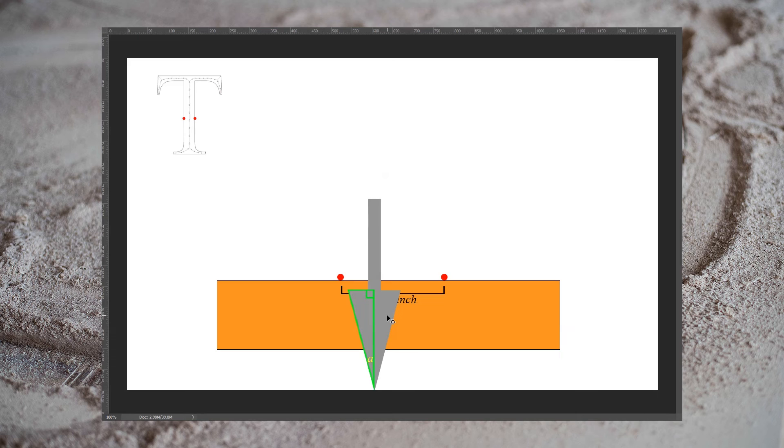Vectric's V-Carve software and their other family of products have a feature called flat bottom depth. Carbide Create lacks this feature, but that doesn't mean we can't manipulate it into doing what we want anyways. In a flat bottom depth v-carve cut, the cutter is set to go to a fixed depth. The bit is used to carve one side, and then the other, and then the material in between can be carved out using a traditional end mill. This gives angled sides, which still maintain most of the look and the aesthetic of a v-carve without requiring an excessive depth.